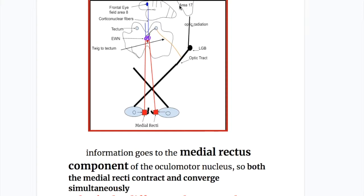In conditions such as neurosyphilis and diabetes mellitus, the pupillary light reflex is lost, but the accommodation reflex persists because it does not depend on the light reflex pathway.